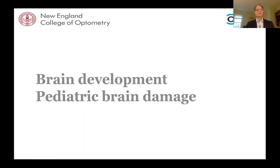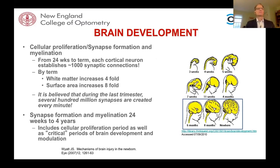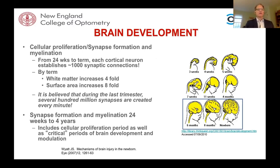Let's begin with pediatric brain damage. It's brain damage rather than brain injury as we see in adults, where the brains are fully developed and the pathways are very much laid out. In the developing brain, quite the opposite is the case, and so we talk about brain damage versus brain injury.